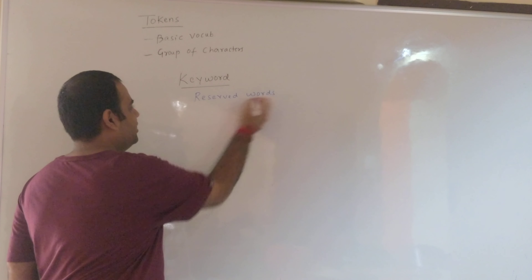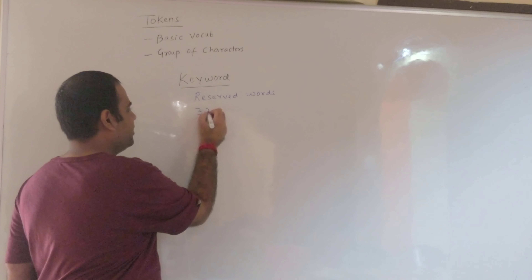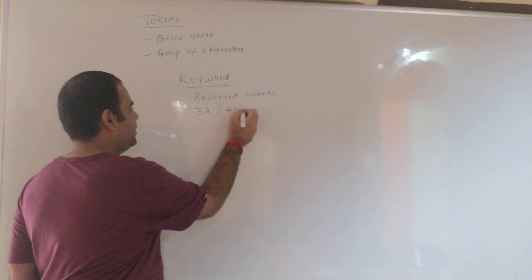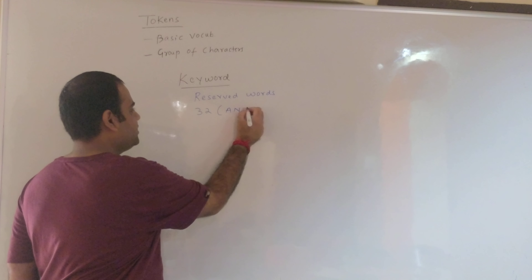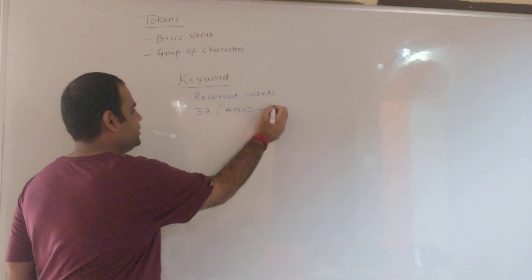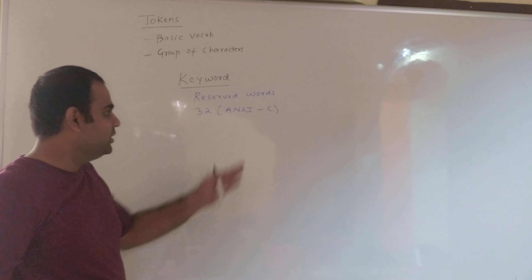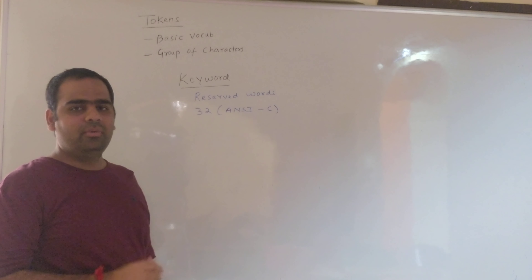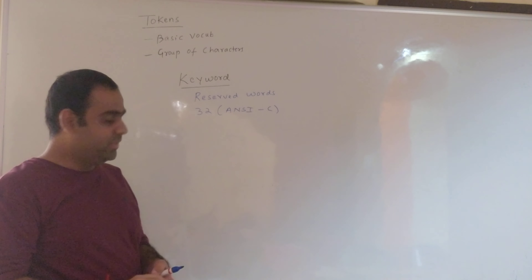There are 32 keywords in ANSI C. ANSI stands for American National Standard Institute. We will study ANSI C in this course.